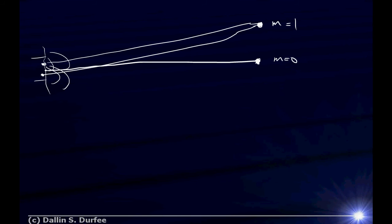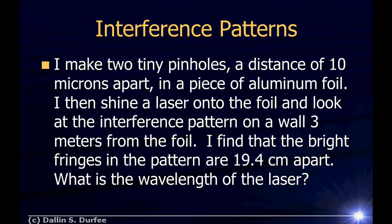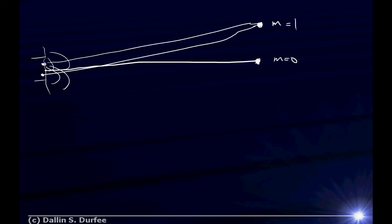which compared to the spacing. And I'm comparing a screen which is three meters away versus 10 microns apart. So I can pretend like these two lines are pretty much parallel. That's a really good approximation. So I draw a line right here, and you see this itty-bitty triangle. I didn't draw it very big,